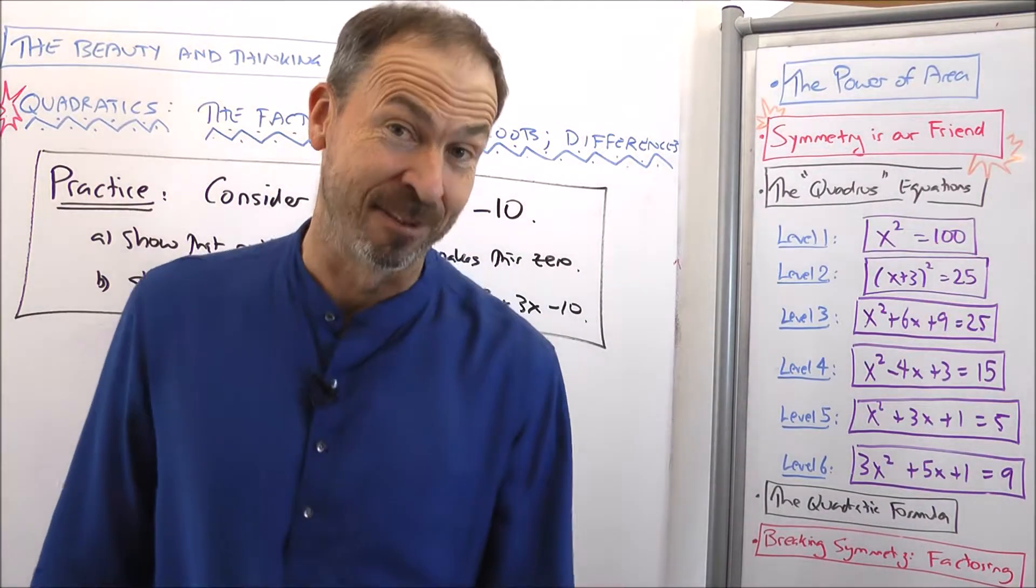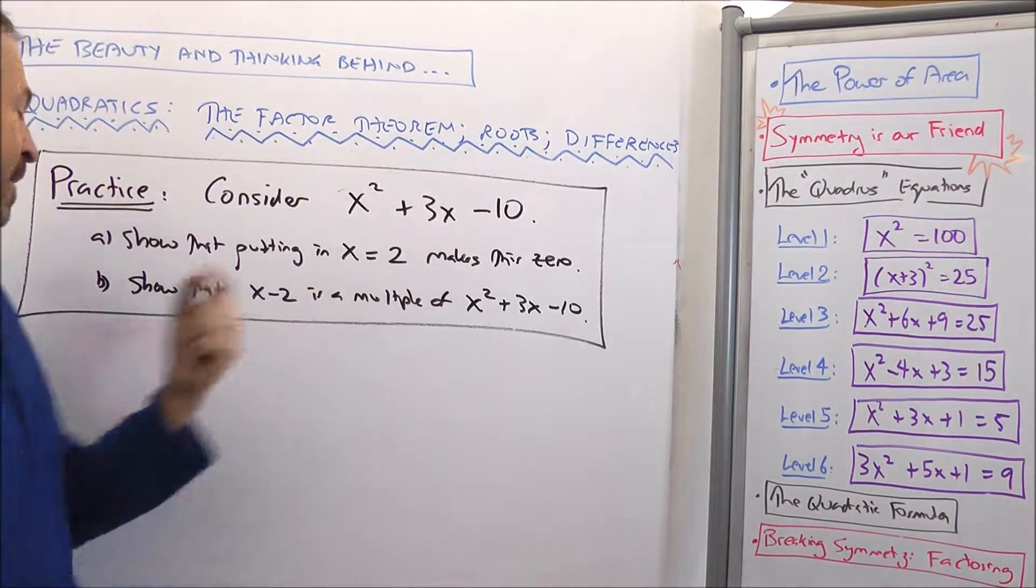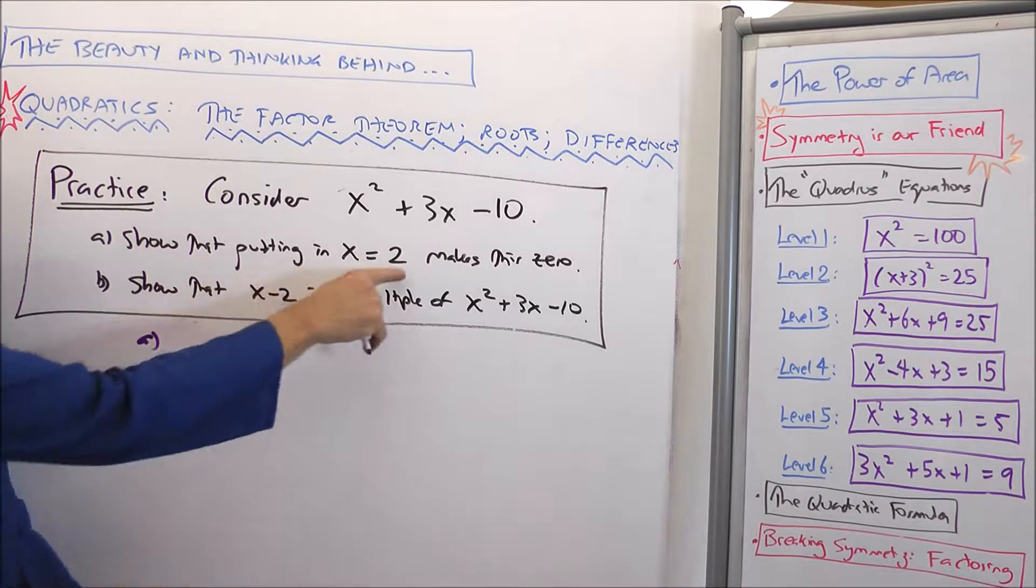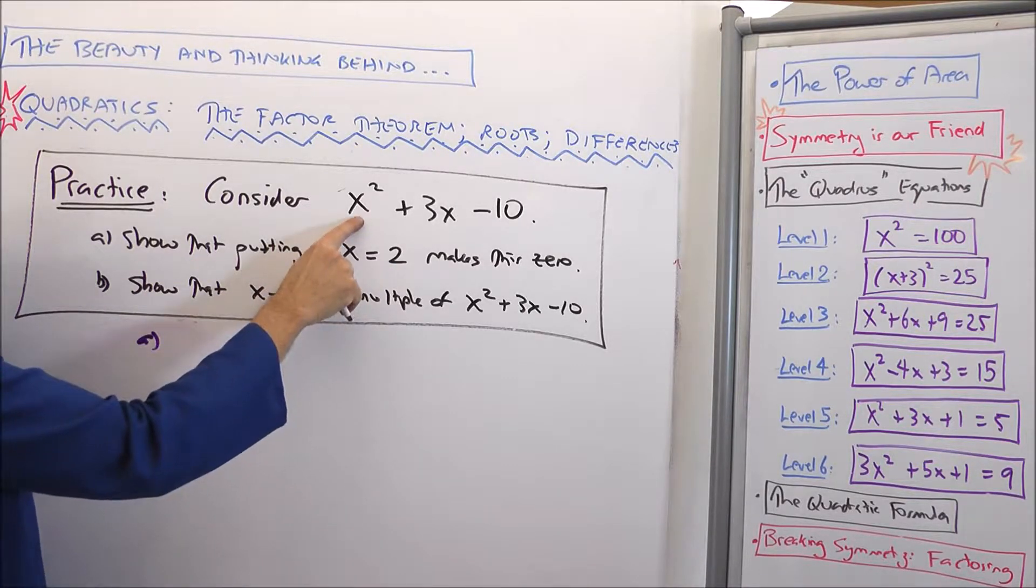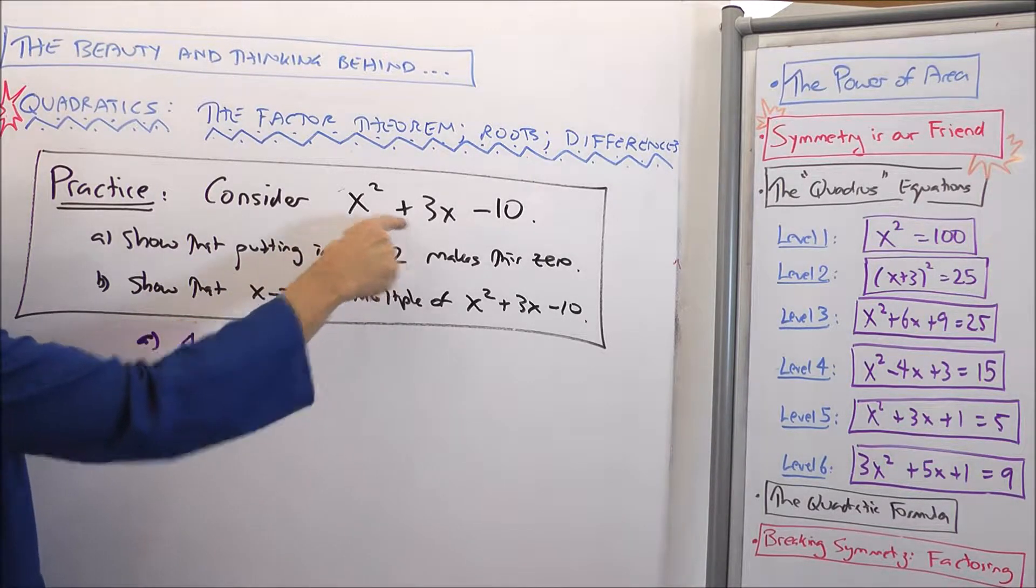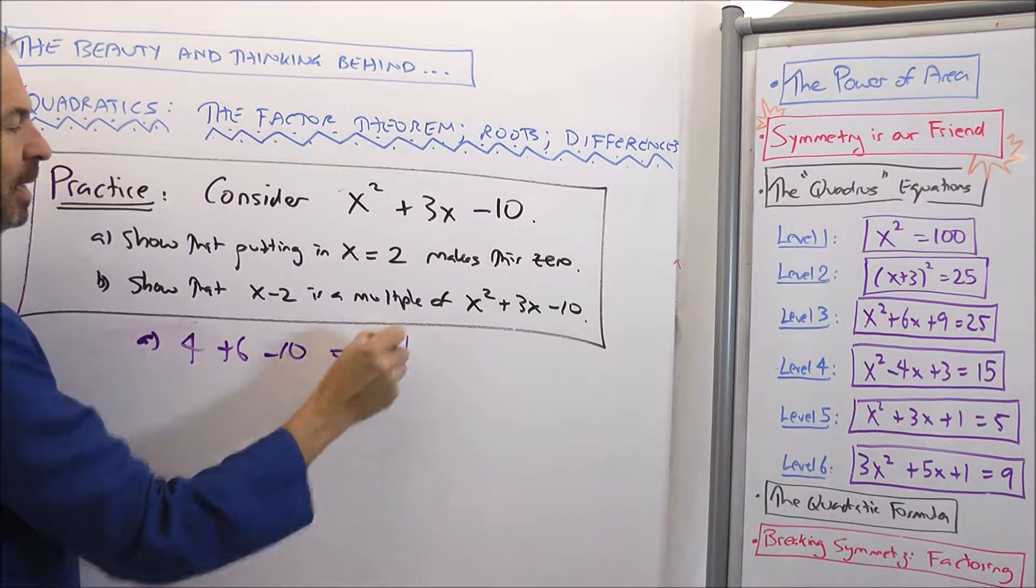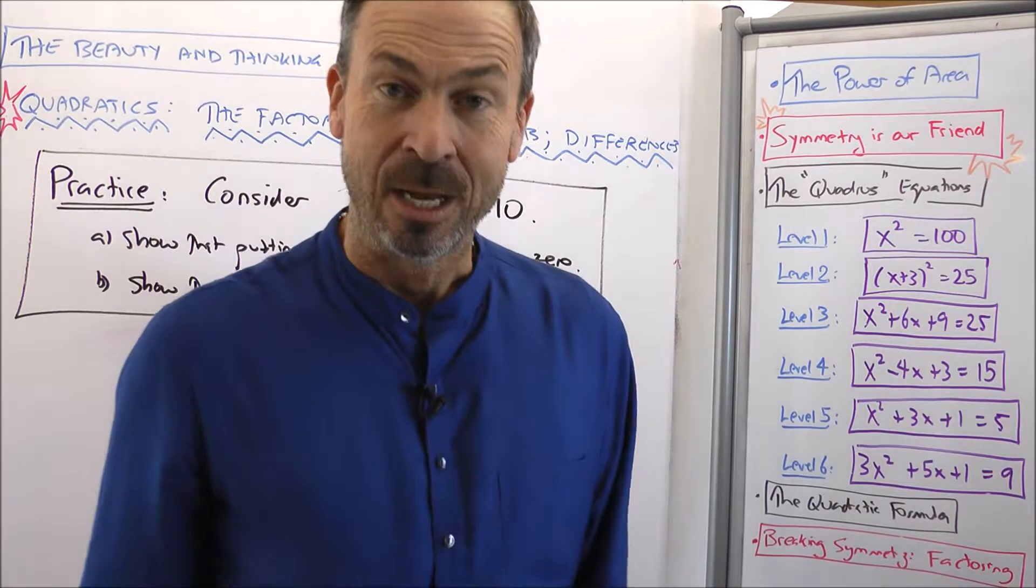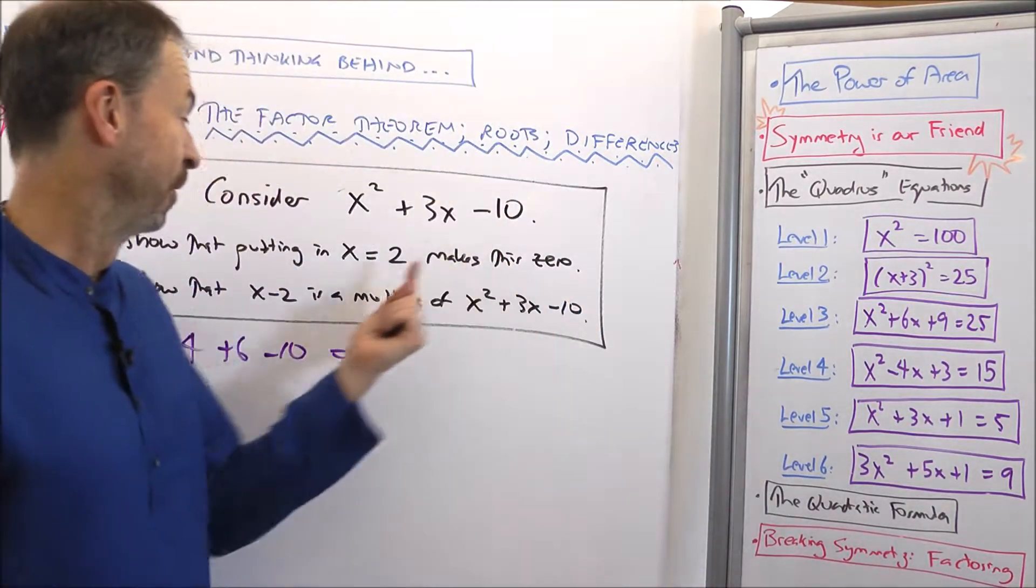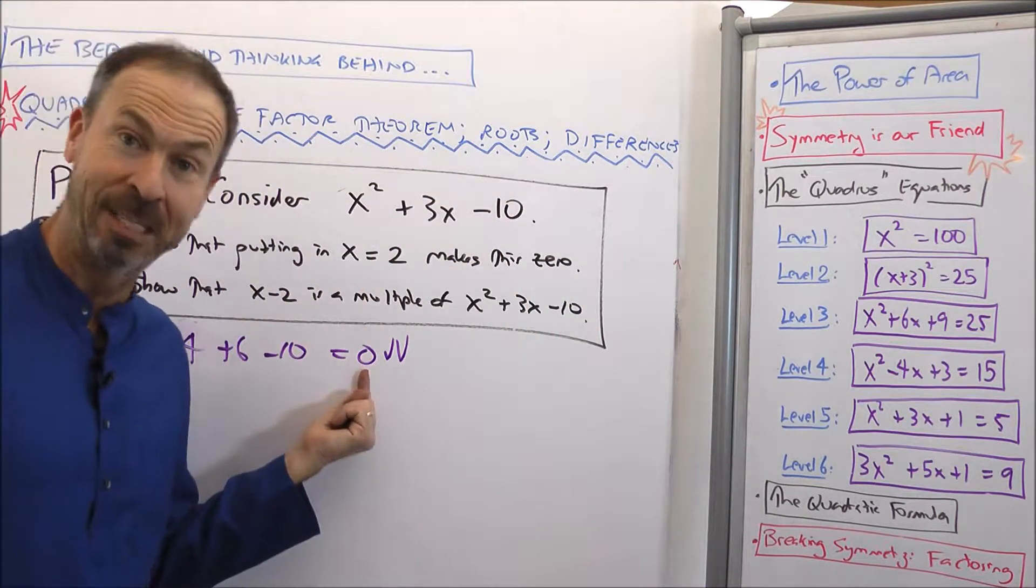Ok, so let's verify the factor theorem for this particular quadratic. Part A. Putting in x equals 2, what do I get? I'll get 2² is 4 plus 3 times 2 is 6 minus 10 and lo and behold, that indeed gives 0. So that shows me when I try to write this as a multiple of x minus 2, I should have 0 error.